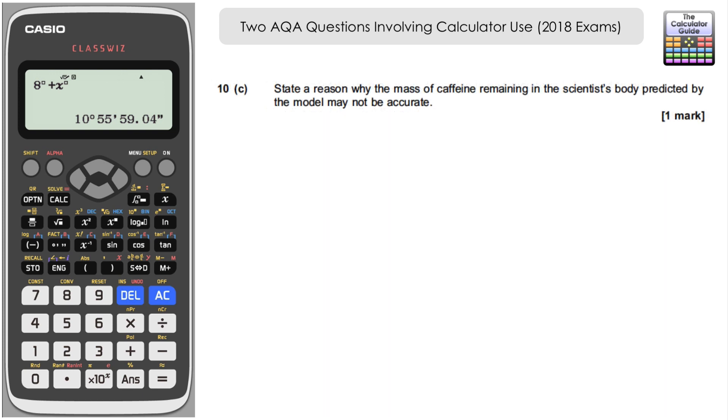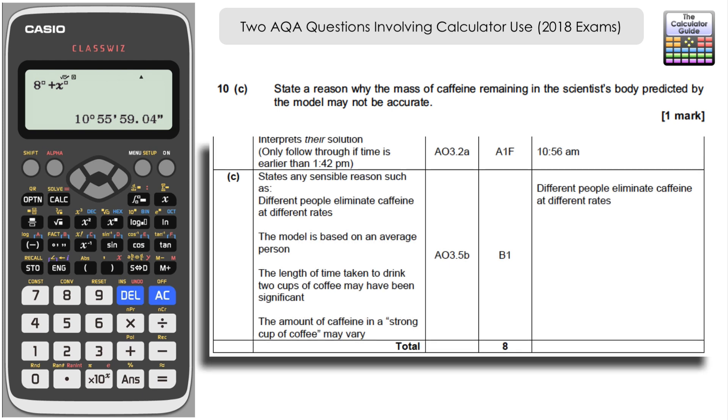Okay finally, just for the sake of completeness we're going to answer part C. This isn't involving the calculator. It's stating a reason why the mass of caffeine remaining in the scientist's body predicted by the model may not be accurate. Let's have a look at some of the reasons they give in the mark scheme. States a sensible reason such as different people eliminate caffeine at different rates, different rates of metabolism, etc. The model is based on an average person, so we don't know if this scientist is average height and weight. The length of time taken to drink two cups of coffee may have been significant. If she took a long time to drink it that may have affected the rate at which it was eliminated from her body. Also the amount of caffeine in a strong cup of coffee may vary. What is a strong cup of coffee? How much caffeine do you have in it? That's maybe a little bit subjective. Basically around different people eliminating caffeine at different rates you want to put as your explanation.